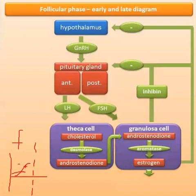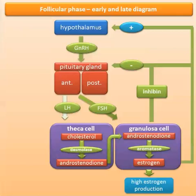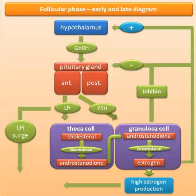But once estrogen rises above a certain level, that feedback switches — it becomes positive, leading to the LH surge. LH has been relatively unchanged up to this point, but once estrogen peaks, both LH and FSH surge, because estrogen now stimulates rather than inhibits the hypothalamus and pituitary. That surge signals you're right at ovulation.